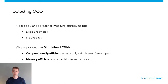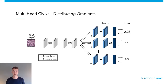Currently there are two popular approaches for this task, which are based on measuring the entropy value of either MC dropout or deep ensembles. We however would like to propose using multi-head CNNs, which are similar to the current state-of-the-art deep ensembles but more efficient through extensive parameter sharing. This leads to a more computationally and memory efficient model. The biggest advantage of being more memory efficient is the ability to train the entire model at once and to promote diversity during training.